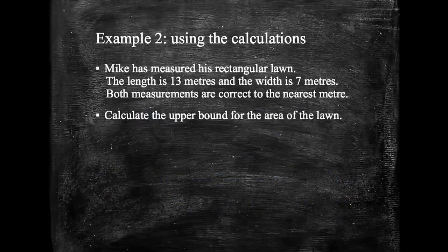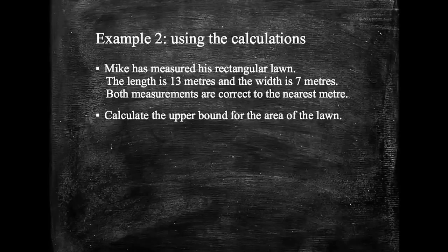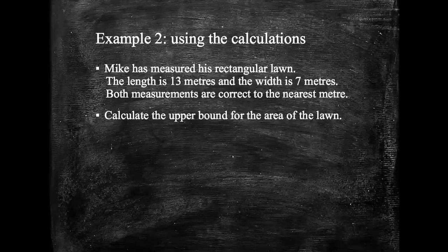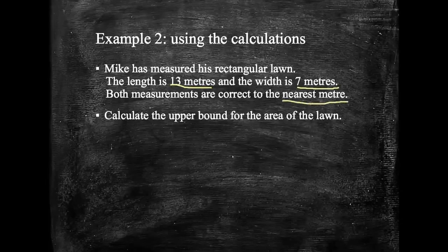Let's have a look at another example here. In example two, it says Mike has measured his rectangular lawn. The length is 13 meters, and the width is 7 meters. So 13 meters and 7 meters. Both measurements are correct to the nearest meter.